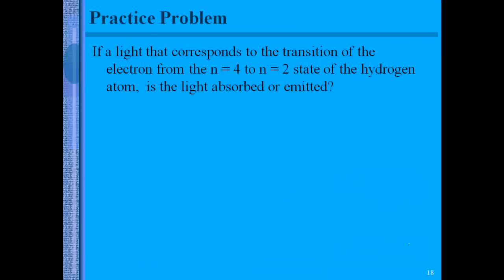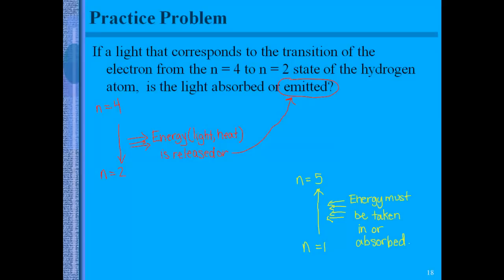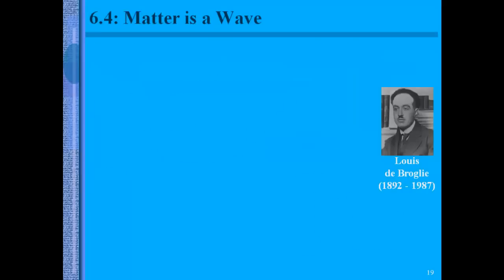So taking a qualitative look at it all, if a light that corresponds to the transition of electron from n equals four to n equals two state of the hydrogen atom, is the light absorbed or emitted? When we start at four and we go to two, in order to drop energy levels, we need to drop energy or release energy. So if energy is released, we're emitting energy. The other way around is if we start at a lower energy level and jump up, we have to take on energy to jump up to those higher energy levels. So energy is taken in or absorbed in this instance.